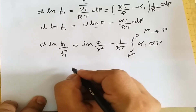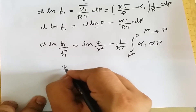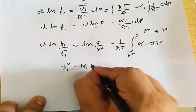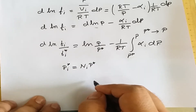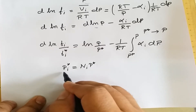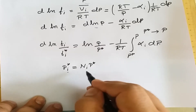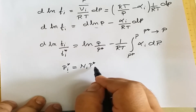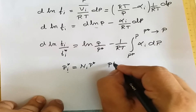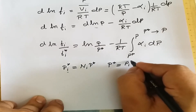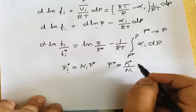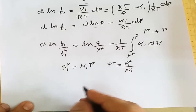From Raoult's law, we know that the partial pressure of any constituent is equal to the mole fraction of that constituent times the total pressure. So p_i = n_i · p, where p_i is the partial pressure and n_i is the mole fraction. Rearranging, p* = p_i*/n_i, and we substitute this value of p* into the integrated equation.